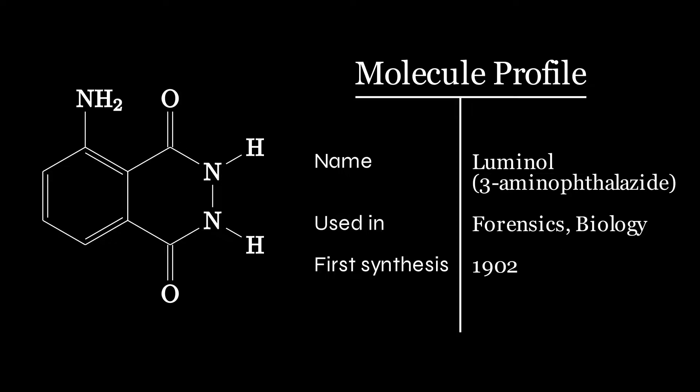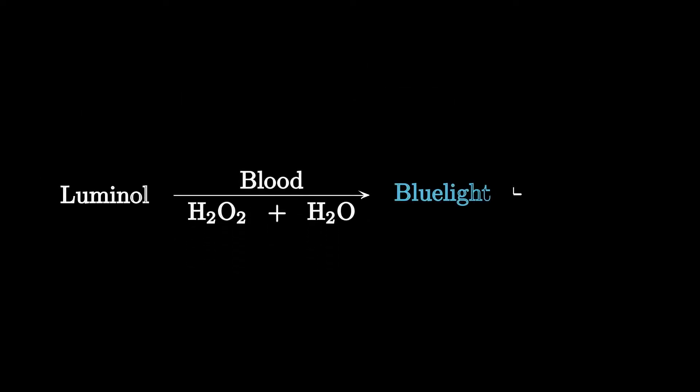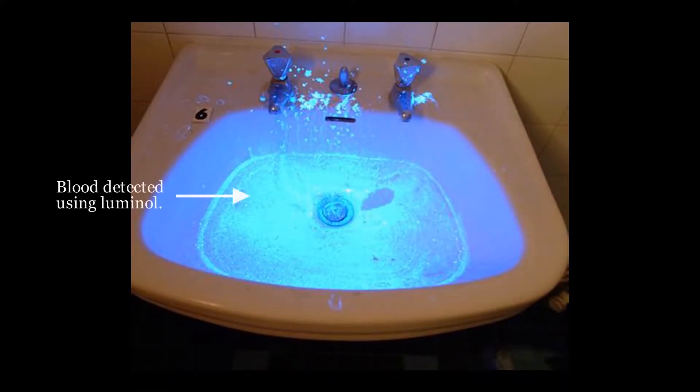Luminol is used primarily in the field of forensics, due to undergoing a reaction when brought in contact with an oxidizing agent, usually a solution of hydrogen peroxide in water, which is sped up by the iron present in the blood via hemoglobin. This makes it easy for investigators to detect trace amounts of blood, and even wiped away blood stains.